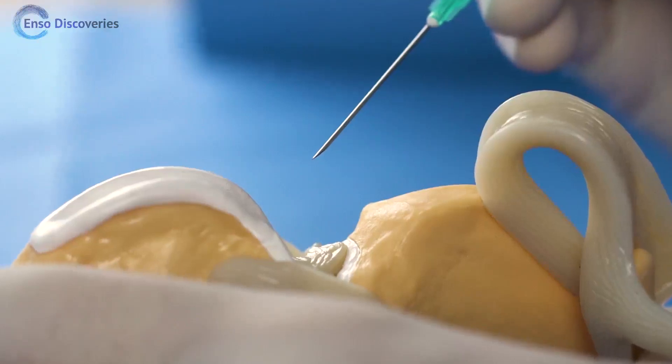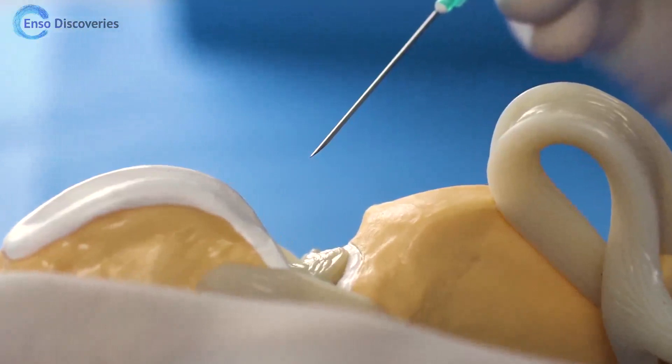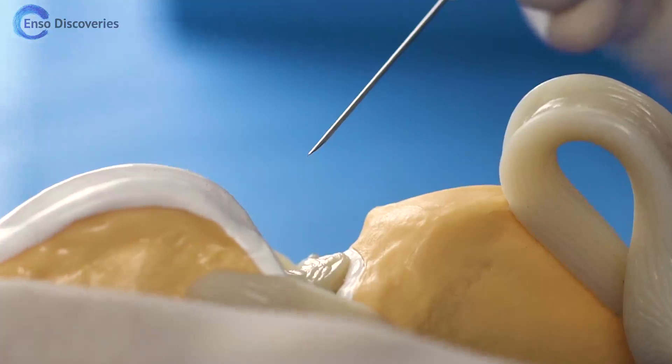To recap, this time from the side with the patellar tendon removed: your injection site is halfway between the tip of the patella and the tibial tuberosity, just to one side of the patellar tendon.